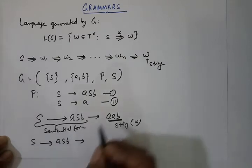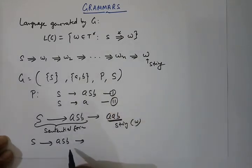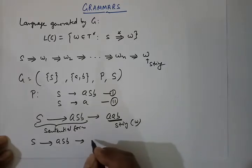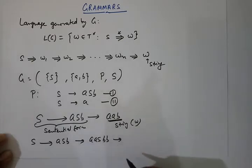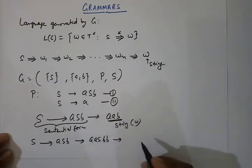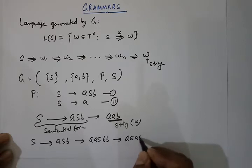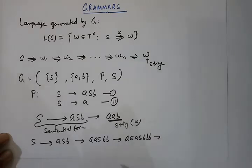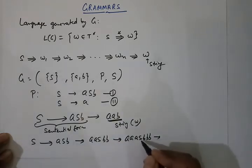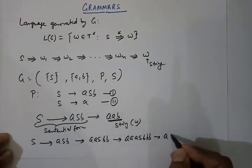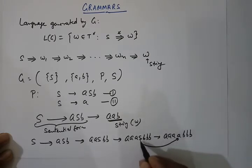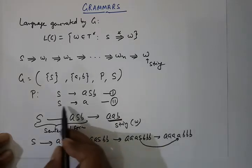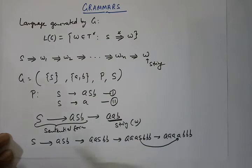Similarly, starting from S we apply production rule one to get ASB, then again to get AASBB, then again to get AAASBB B. Finally applying production rule two, S is replaced by A, giving AAAABBB — this is our final string, and up to the previous step it was a sentential form.